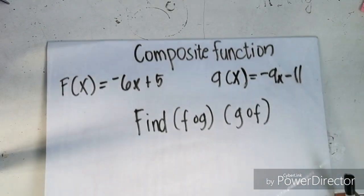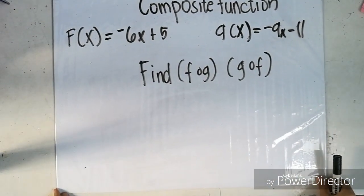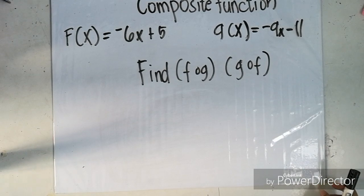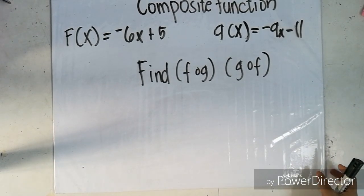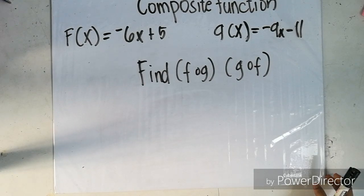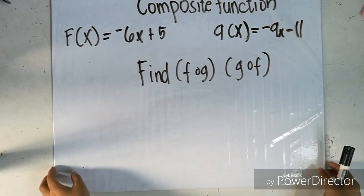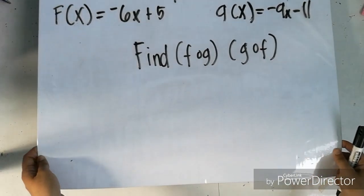For the next example, f(x) = negative 6x plus 5 and g(x) = negative 9x minus 11. Find f of g, and also find g of f.